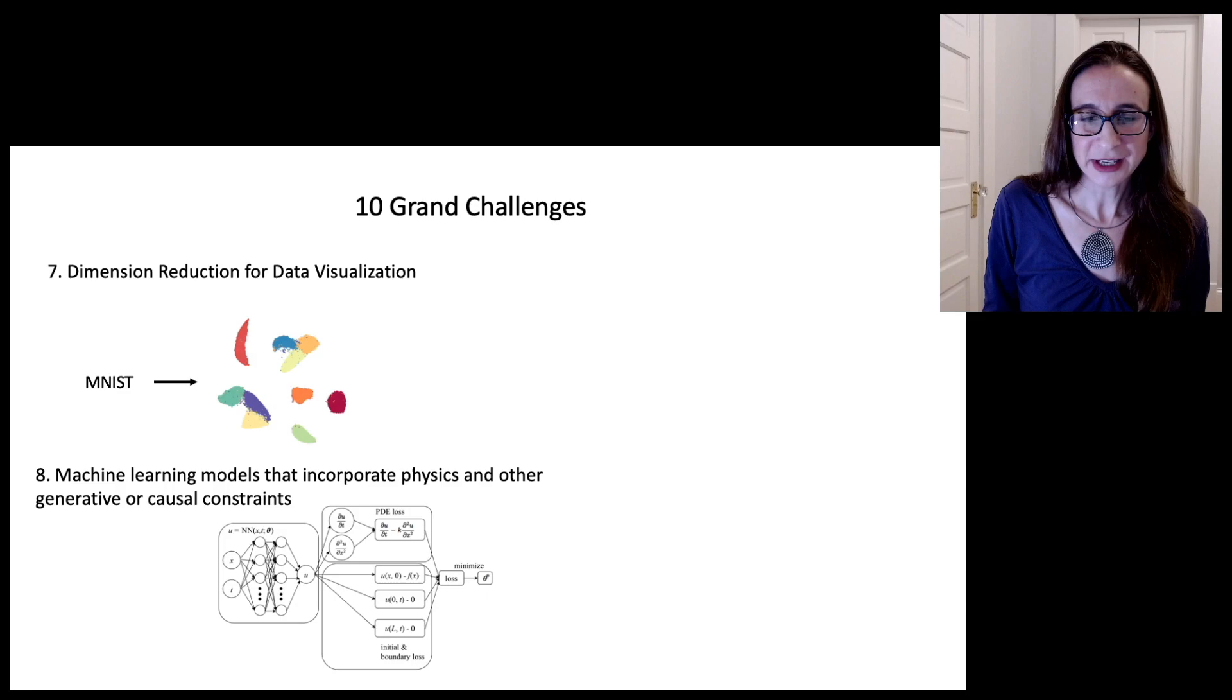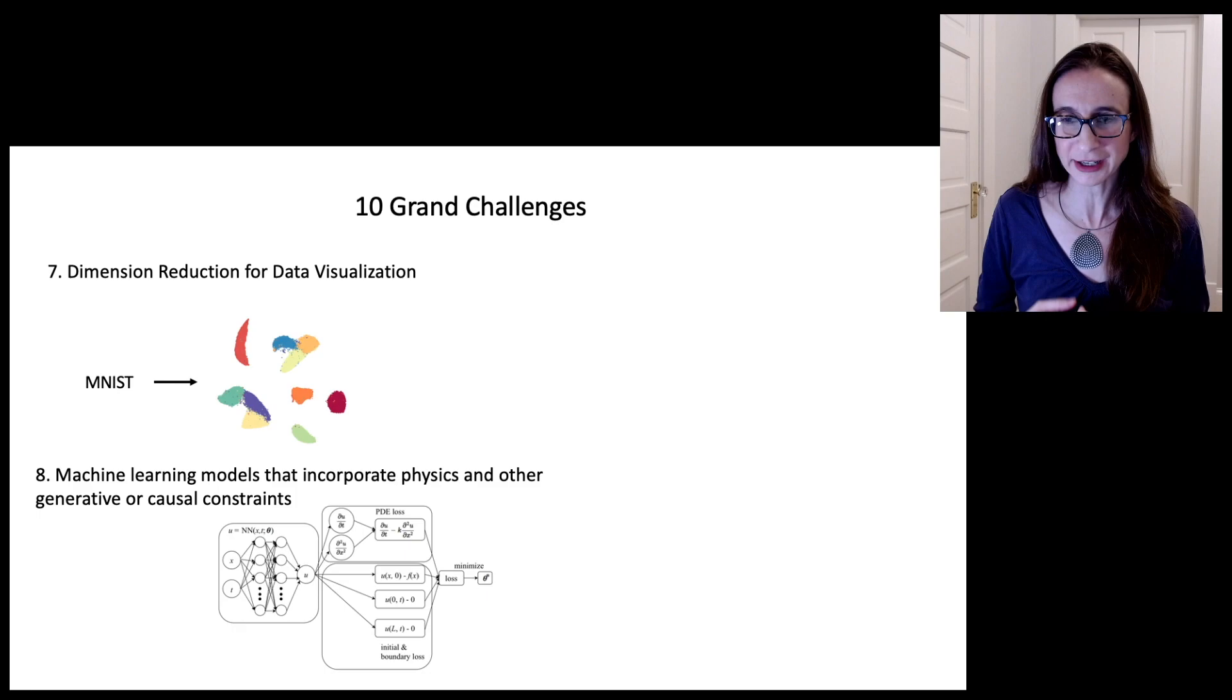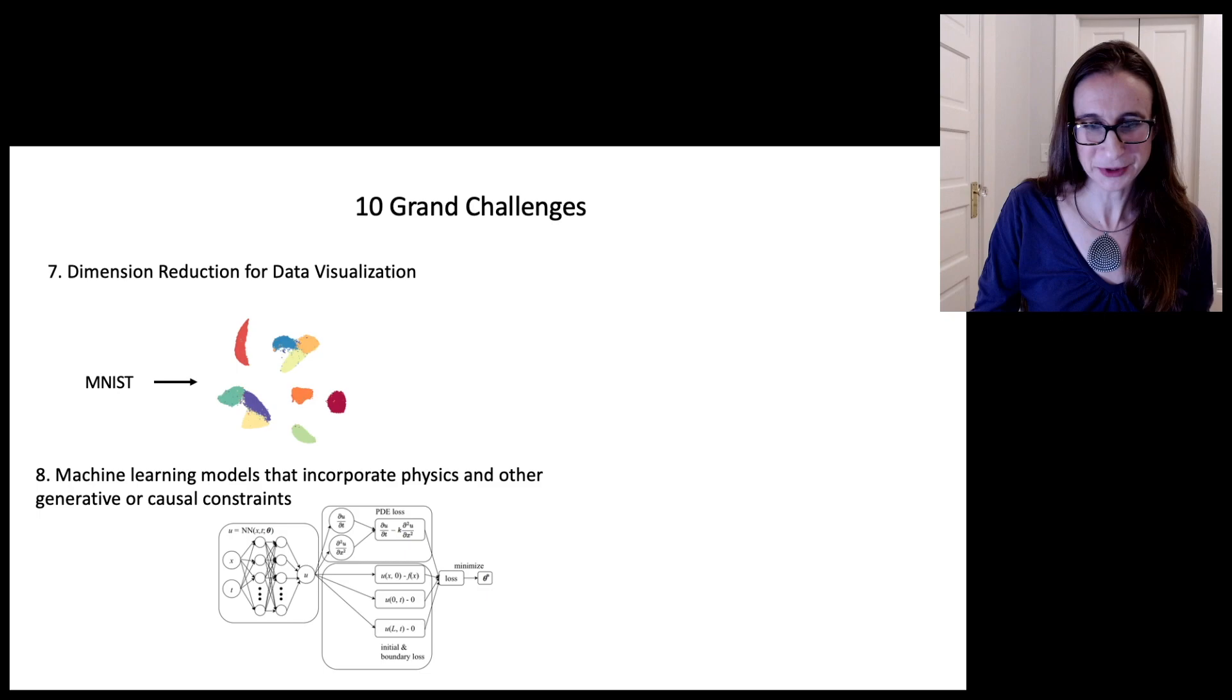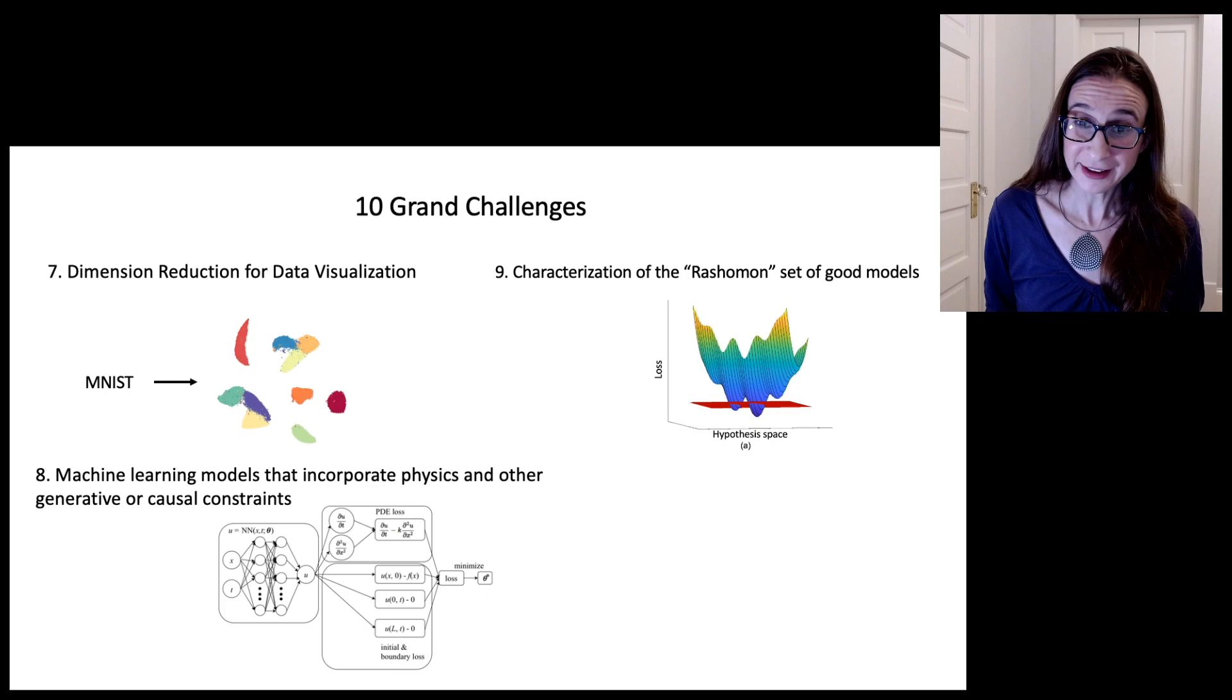The eighth one is machine learning models that incorporate physics and other generative or causal constraints. A lot of people wouldn't even think a model is interpretable unless it has the correct causal information in it. And so this eighth challenge deals with how to put that information into a machine learning model. How to put physics into a machine learning model.